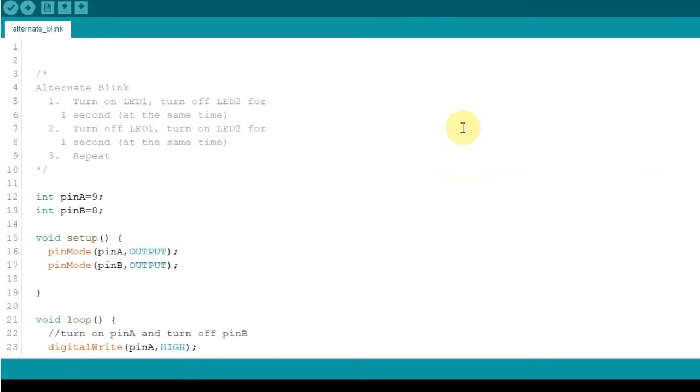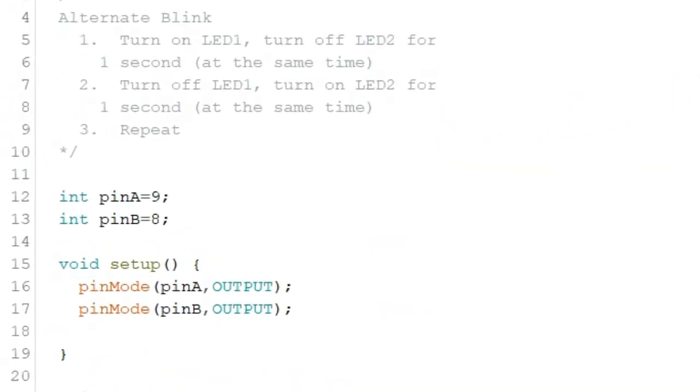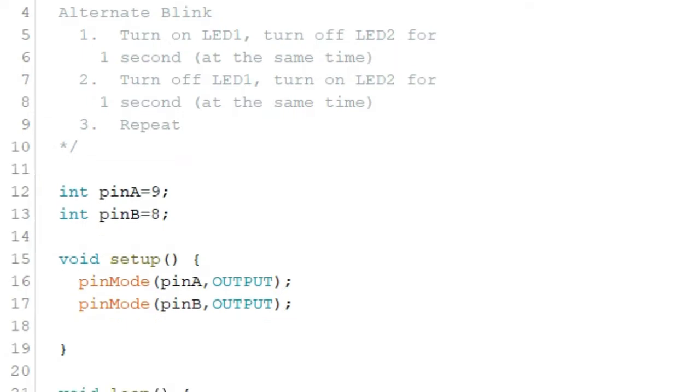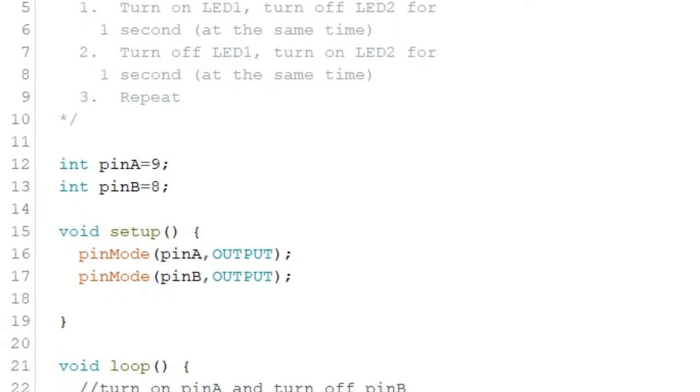And this goes on in a loop until there is no more power supplied to the Arduino board. Here is the complete code. First we need to declare two variables for the two digital pins that we are using. Pin 9 is assigned to the variable pin A and pin 8 is assigned to the variable pin B.